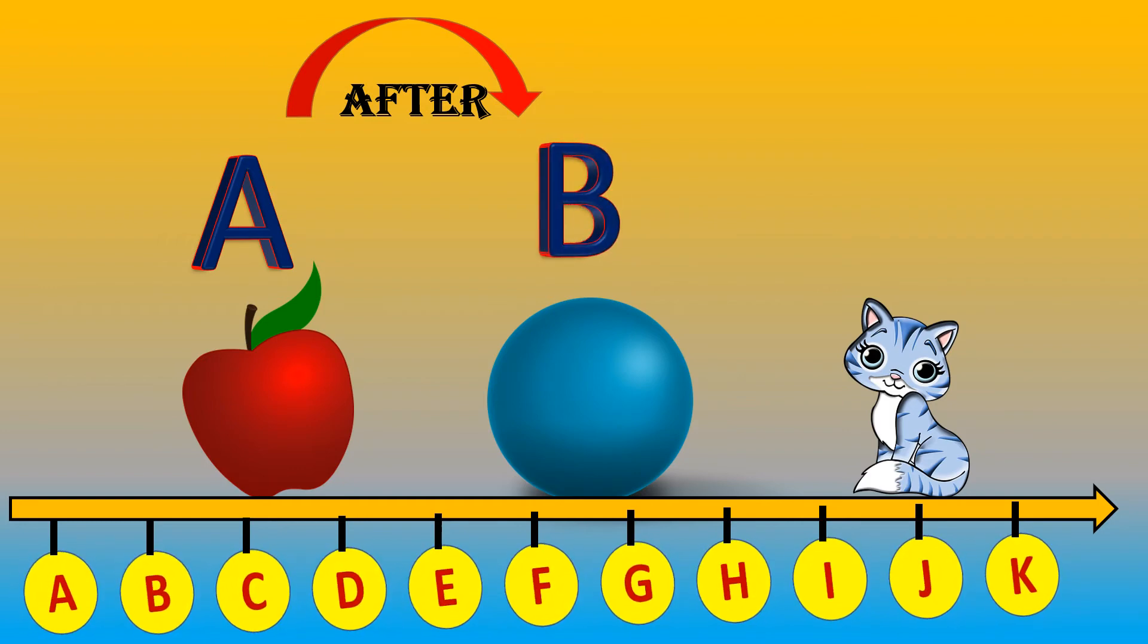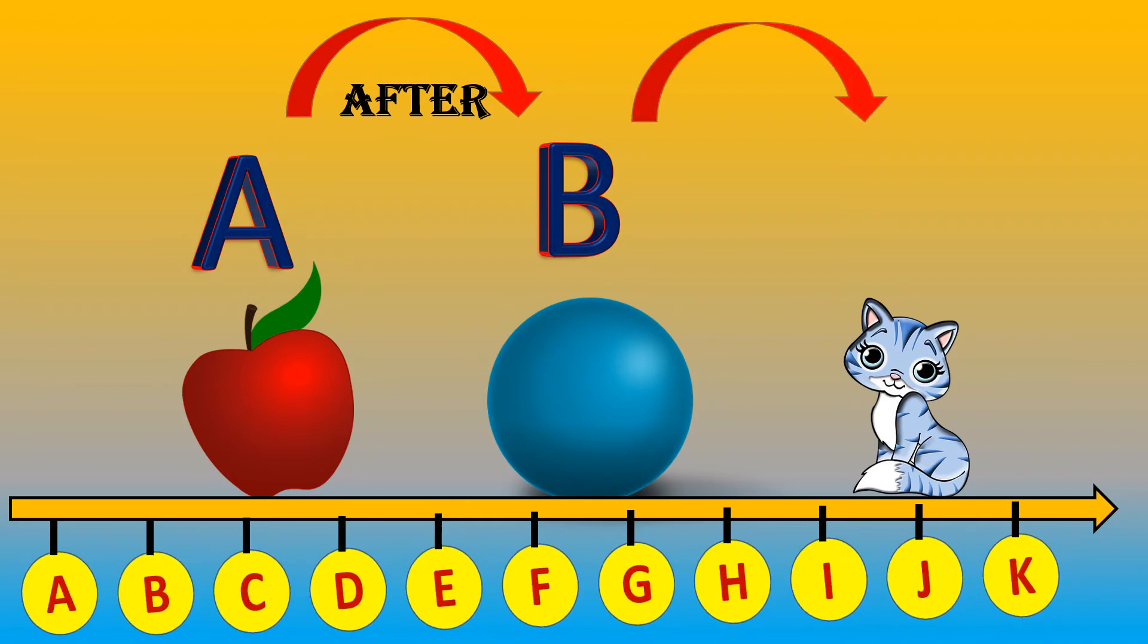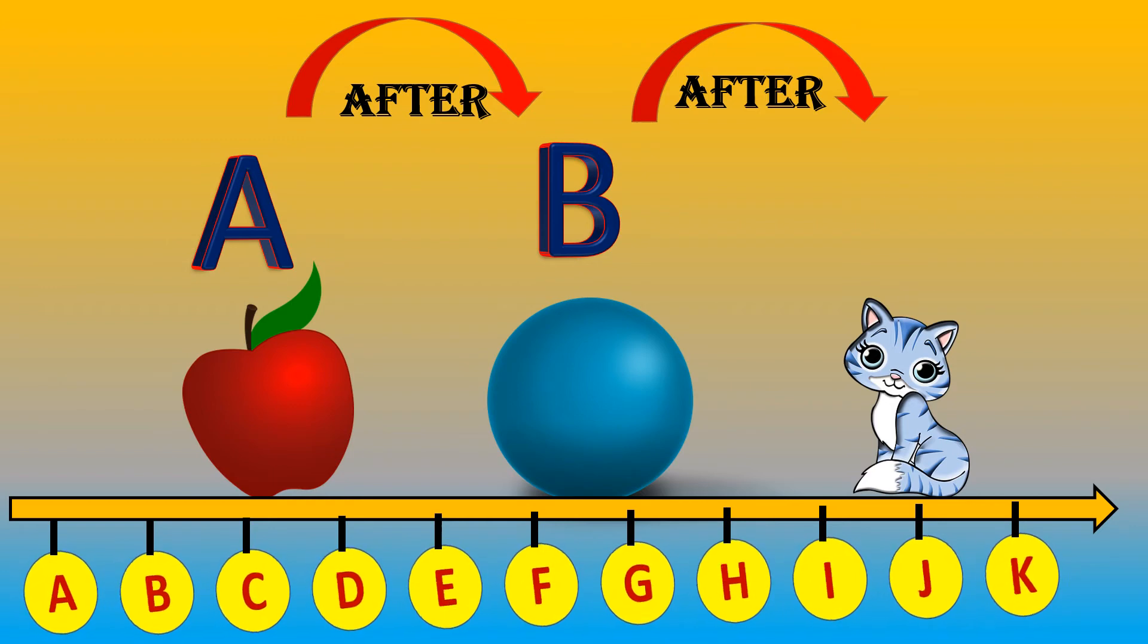Now, again carefully look. Letters are giving us a hint. Observe them. So, now which letter is after B? Oh, it's letter C.